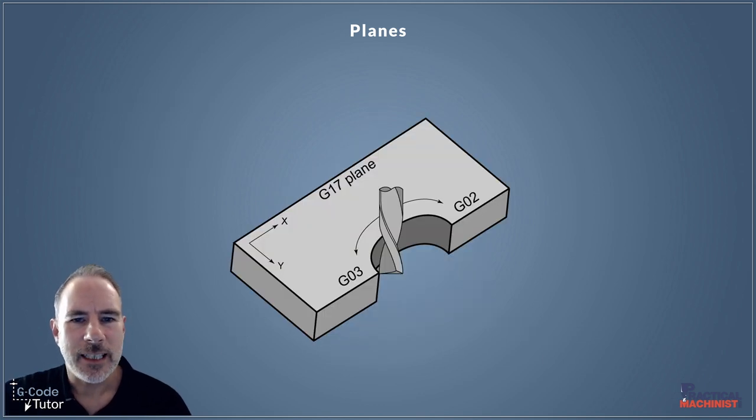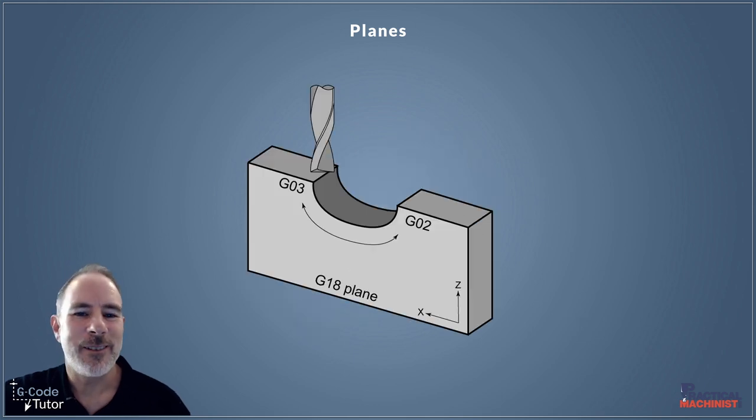When we're cutting in our standard G17 plane, our radiuses would look like this, because we're cutting flat on the table. But if we switch over to G18, now I know the image shows a flat bottom cutter and not a ball nose, but we would use a ball nose to cut a radius.